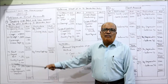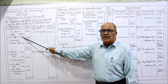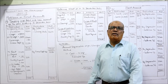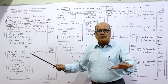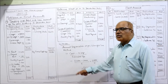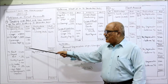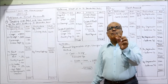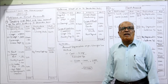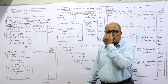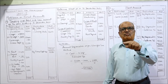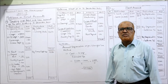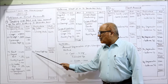Wages paid in the trial balance are 5,000. Wages outstanding from the adjustment is 200, so total wages are 5,200. Carriage: nothing is specified so we assume it is carriage inward — 150. Taking the total on both sides: 18,100. The balancing figure is gross profit carried down: 18,100 minus 2,000 minus 9,500 minus 5,200 minus 150 equals 1,250. So gross profit is 1,250.